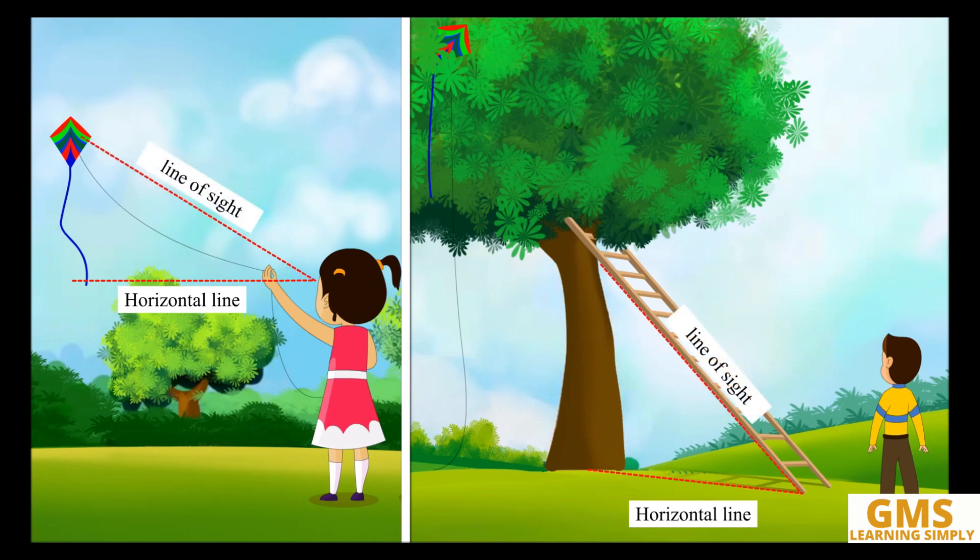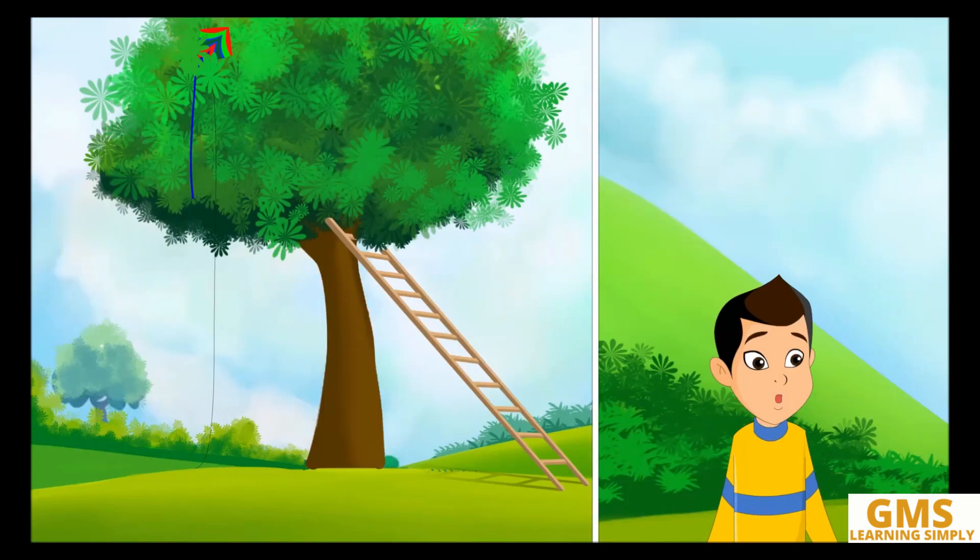A line of sight is an imaginary line from the eye of an observer to the object. The vertex of angle is called an observation point.